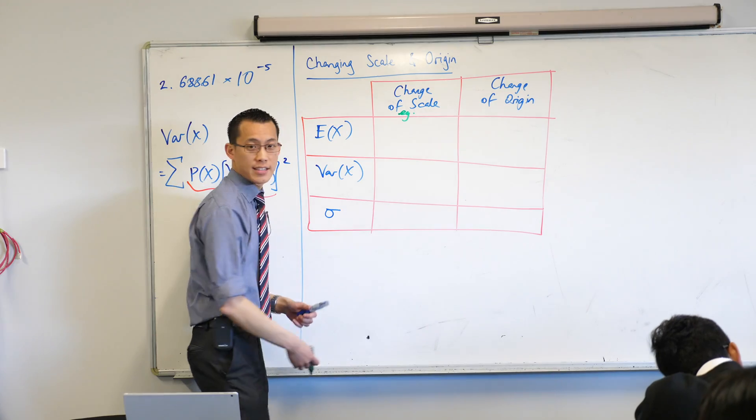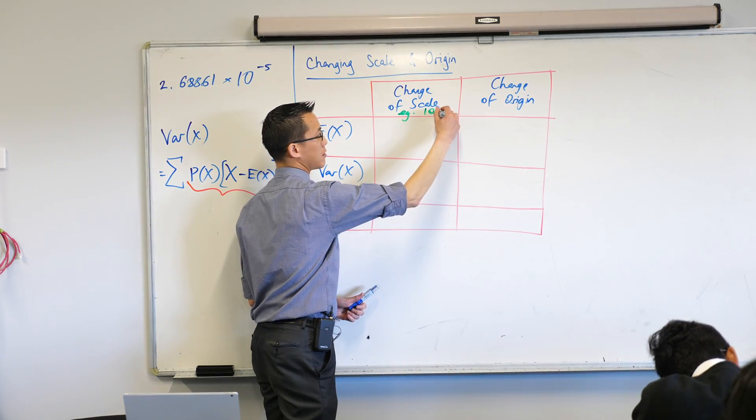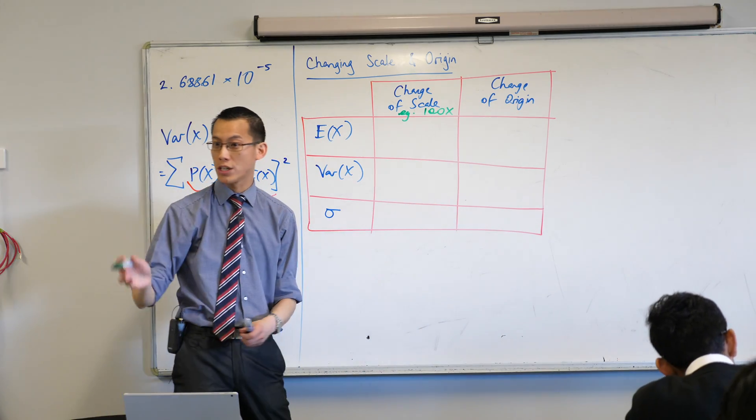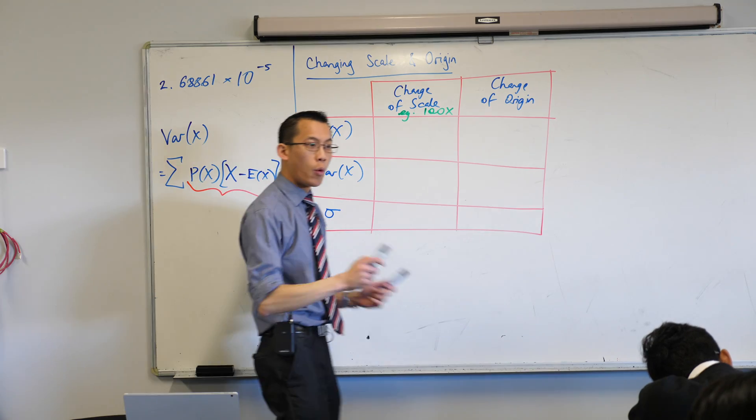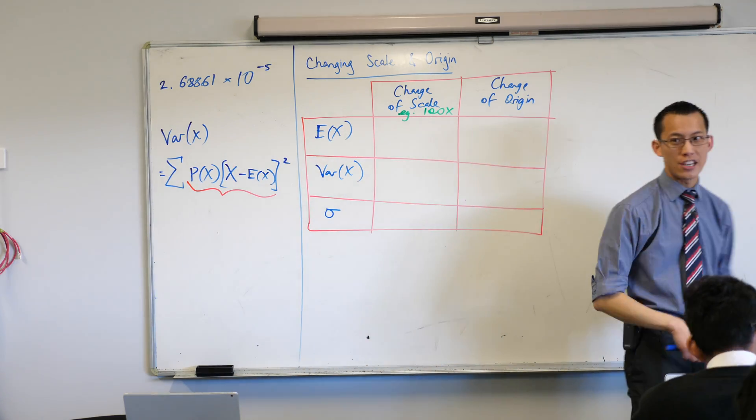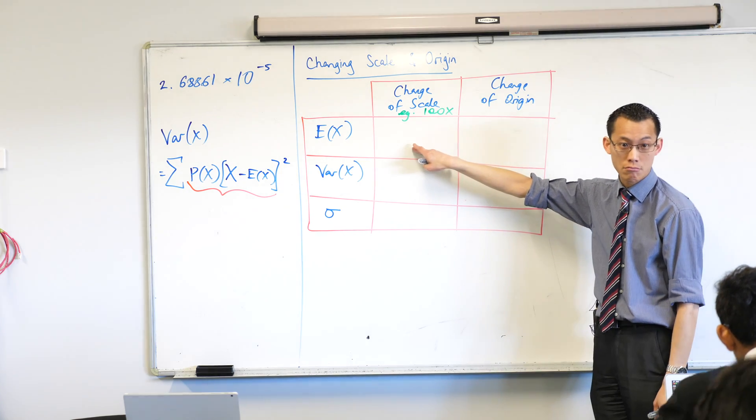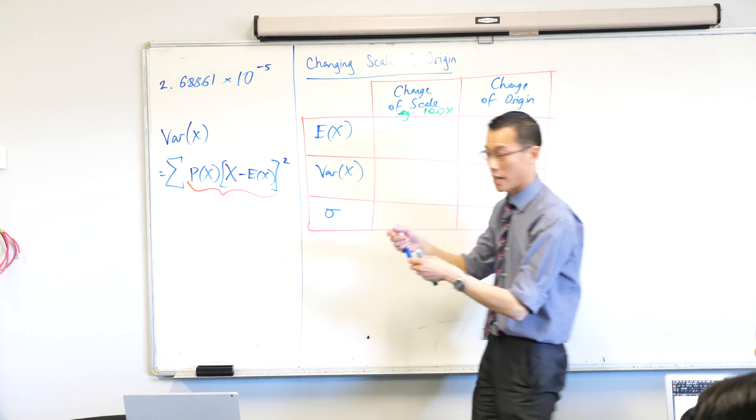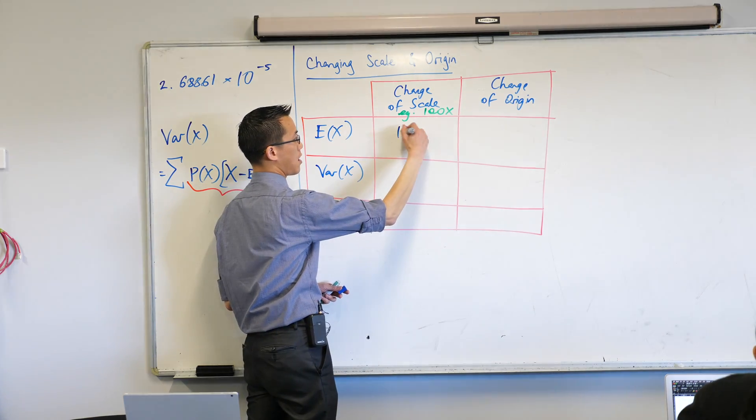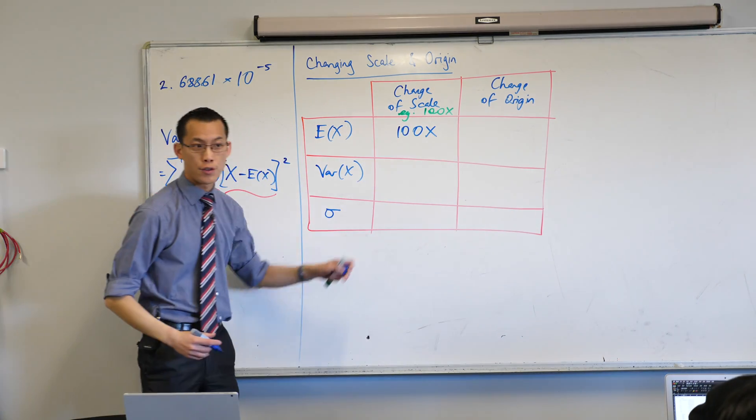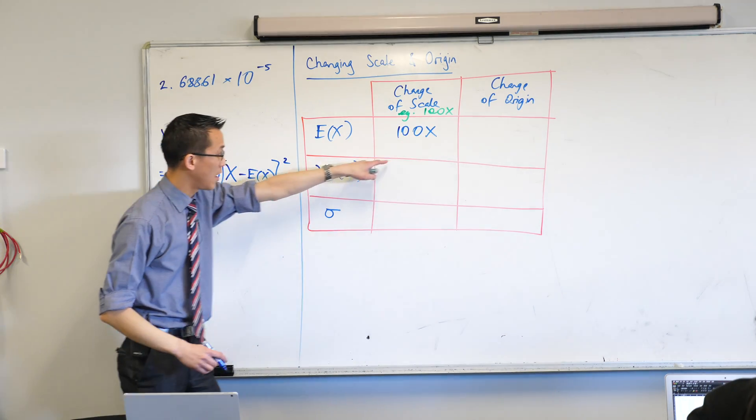Our example was, instead of having x, maybe we have 100x. That's what we did when we changed from meters to centimeters. What happened to our expected value? We made all our data 100 times bigger. So what happened to your expected value? Also 100 times bigger, right? So 100x, if you've got a change of 100x, your expected value also goes up by 100 times.